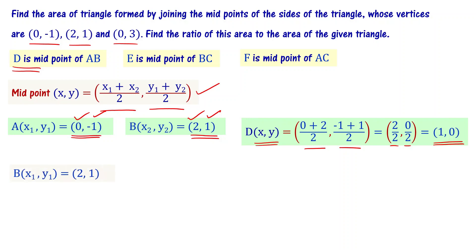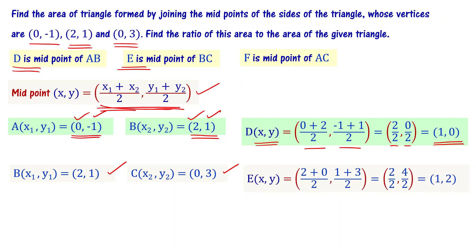For midpoint E of BC, using B = (2, 1) and C = (0, 3): E = ((2 + 0) / 2, (1 + 3) / 2) = (2/2, 4/2) = (1, 2). So the coordinates of E are (1, 2).